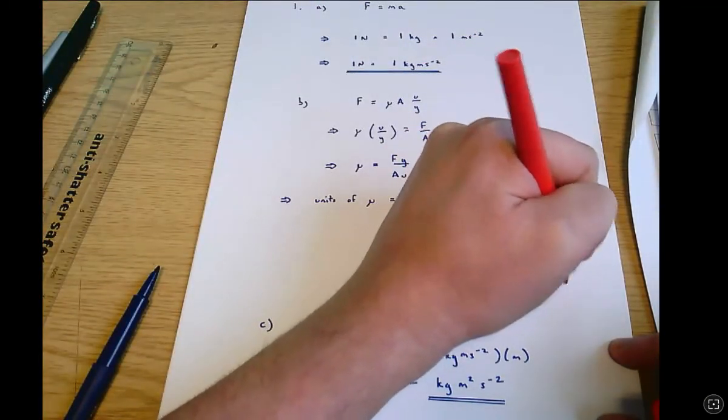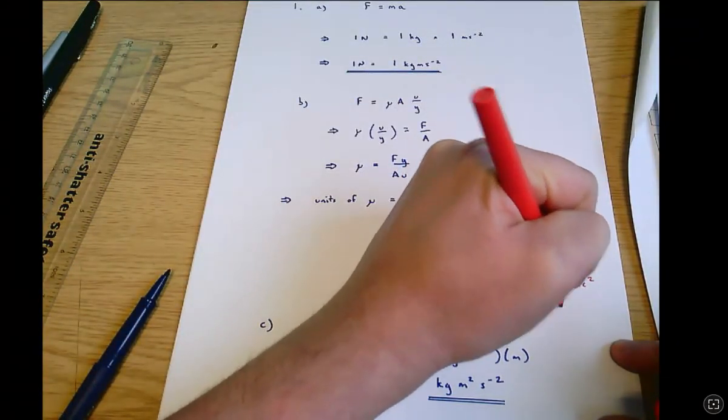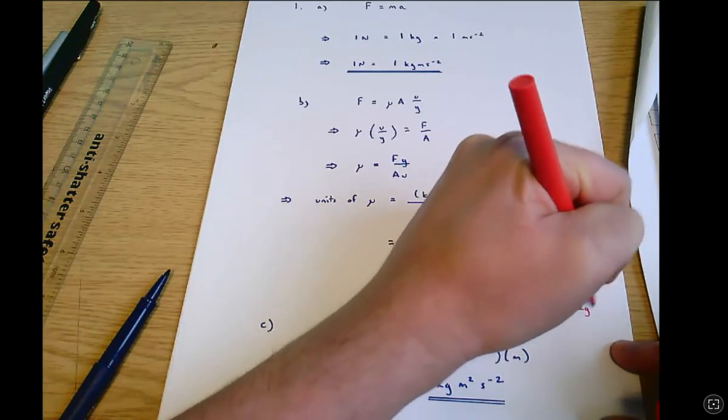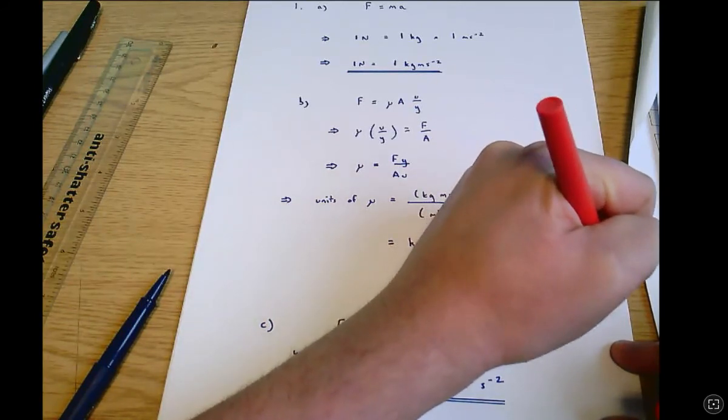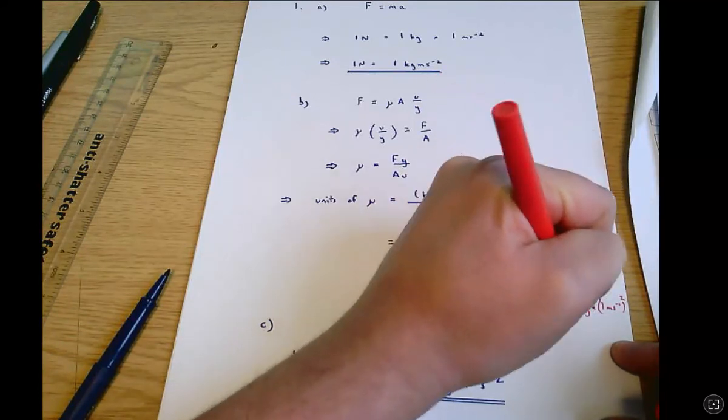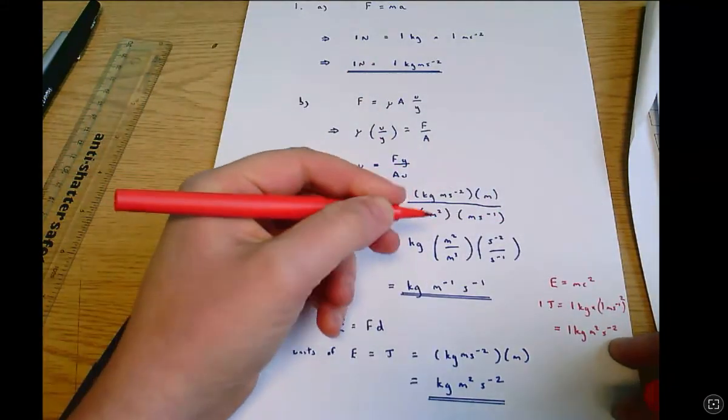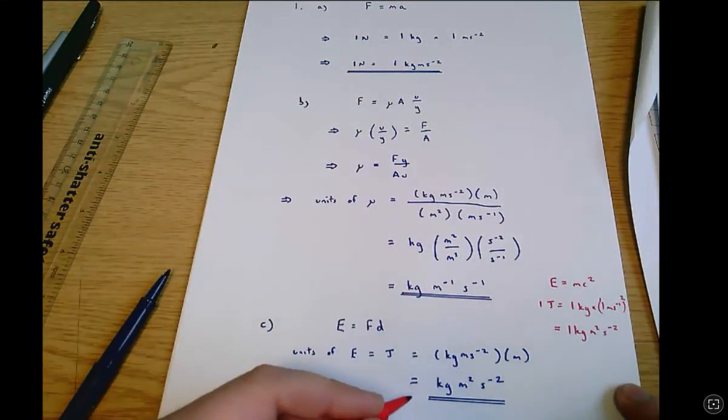That will give you that one joule equals one kilogram times one meter per second all squared which equals one kilogram meters squared second to the minus two which is the same answer that we got working through from a different equation.